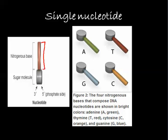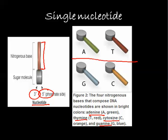The sugar molecule side is called the three prime end and the phosphate side is called the five prime end. This constitutes a complete nucleotide. Nucleotides are of four types: adenine, thymine, cytosine, and guanine. Pyrimidines have a single ring and purines have a double ring. The combination of all these nucleotides forms a complete strand of the DNA molecule.